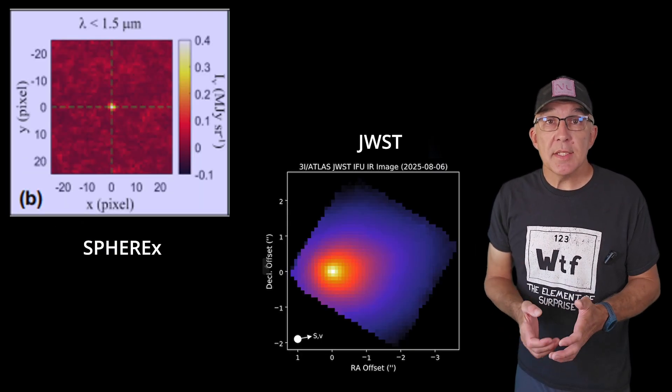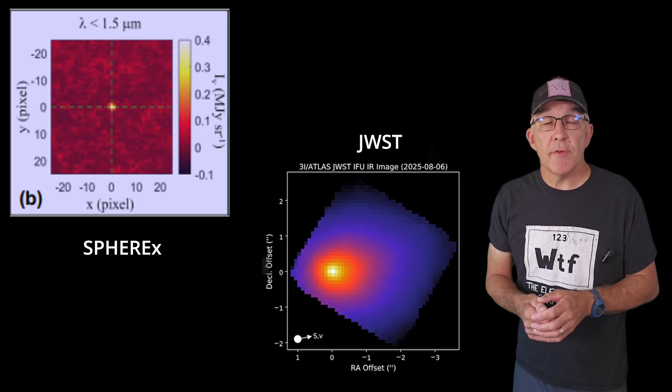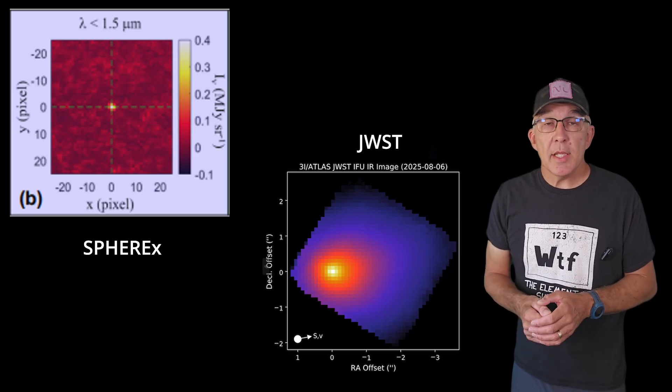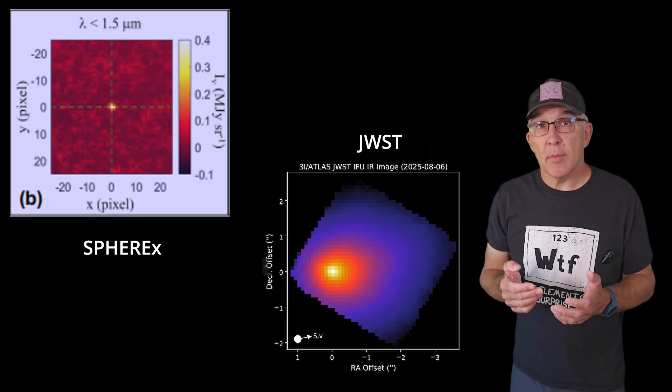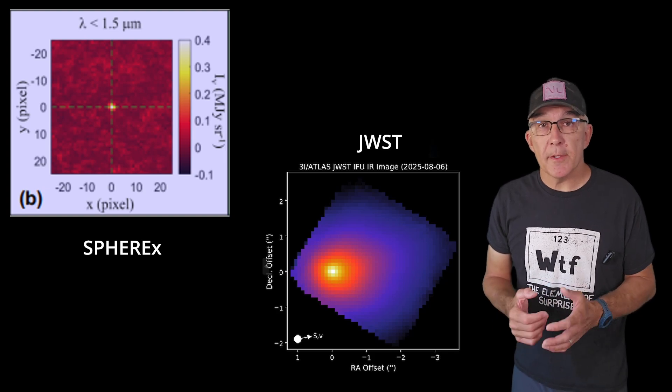As you can see in this image though, the resolution makes a big difference visually. For SPHEREX, the comet is just a point source, but for JWST we can see a nucleus and a clear coma around it.